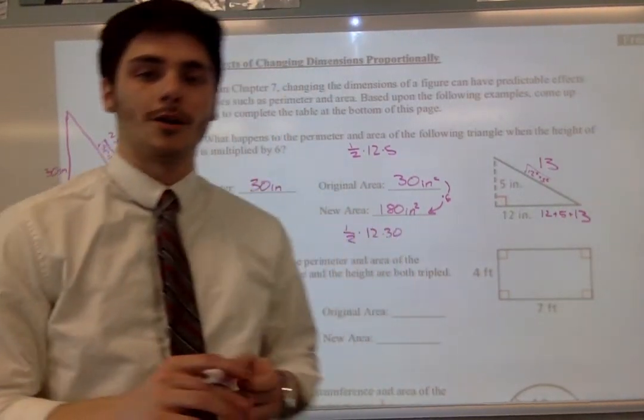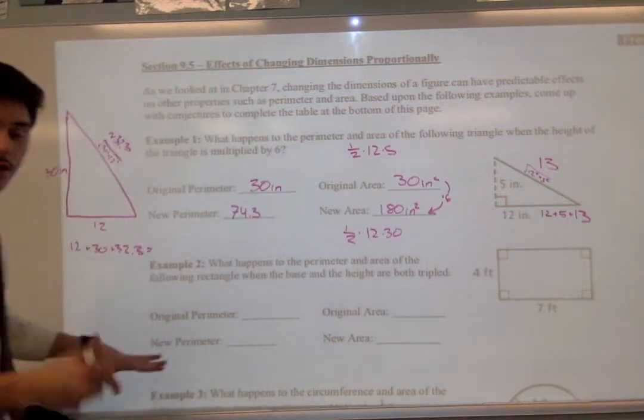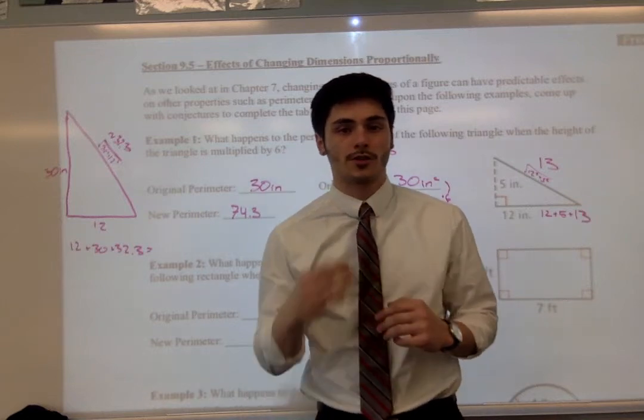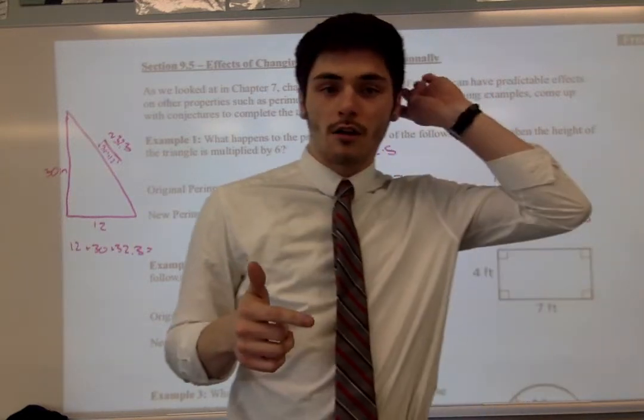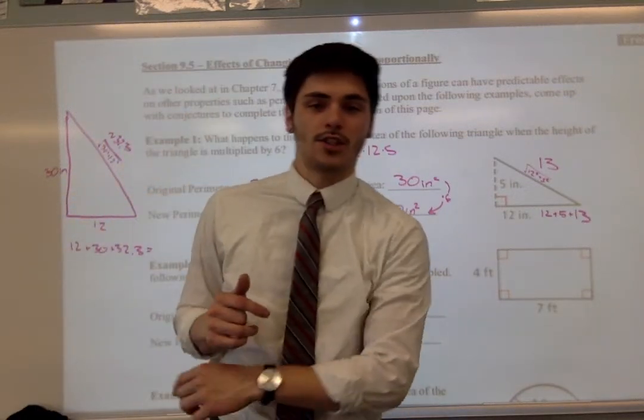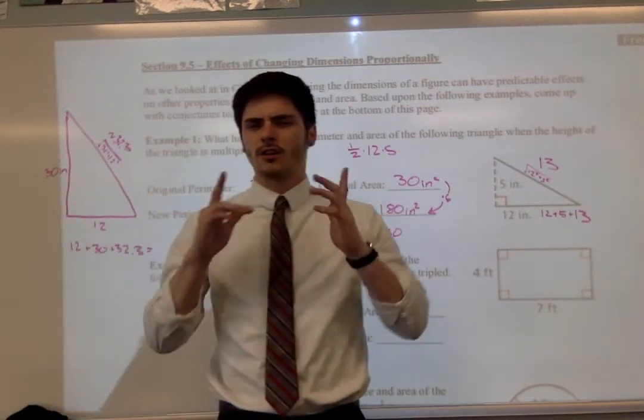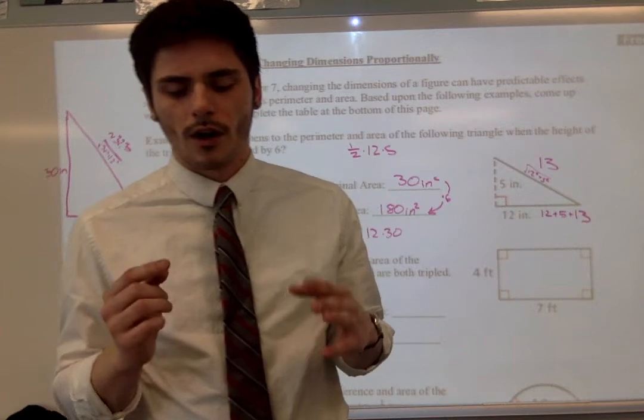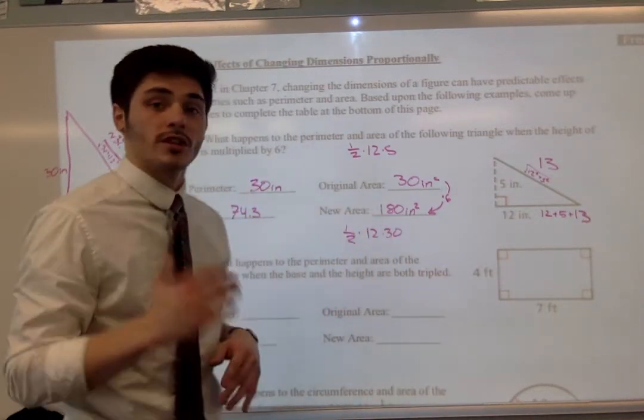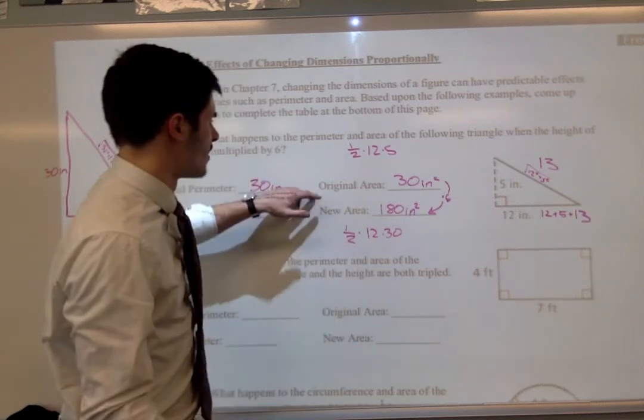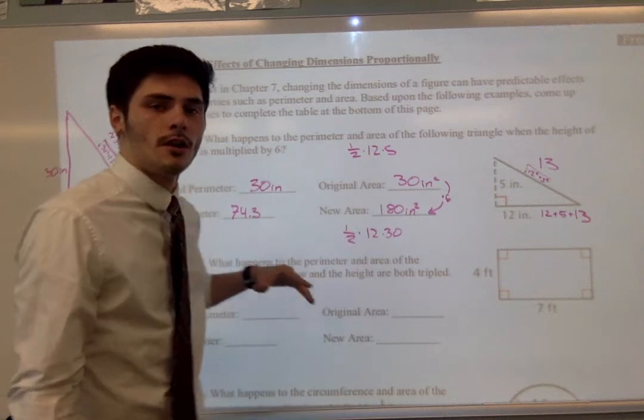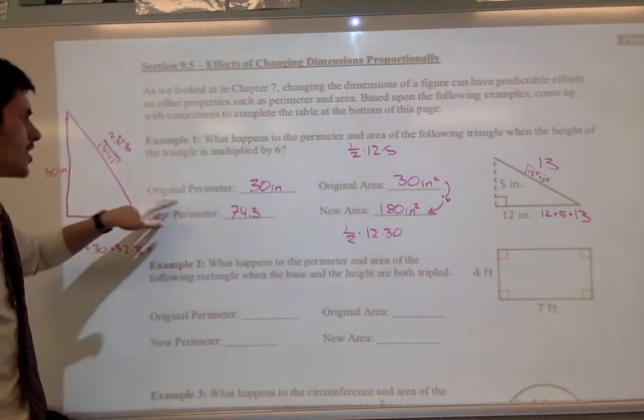So I want you all to go through the rest of these examples, find the perimeter of the original, find the area of the original, find the perimeter and area of the new object after the change of dimensions. And I want to see if you can come up with the rules that happen every time. So every time we change a dimension, every time we multiply a dimension by 6, is the area going to change by a multiple of 6? Is that true? See if you can find something for changing the perimeter.